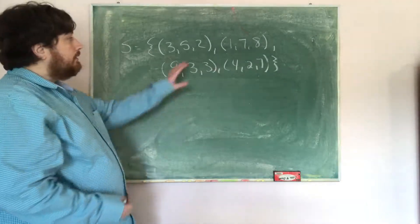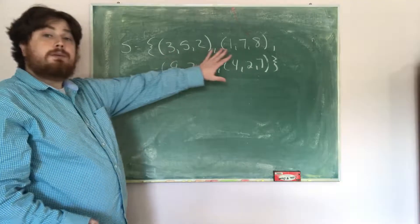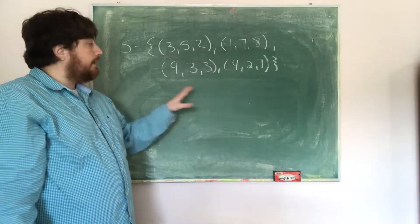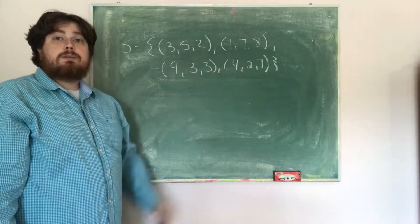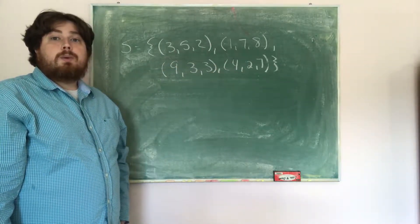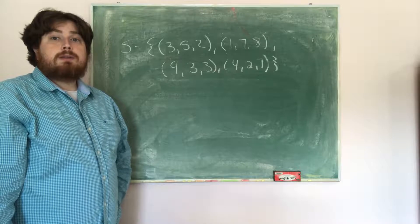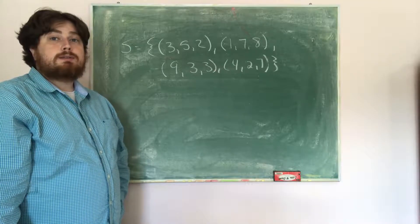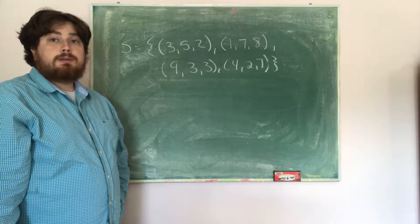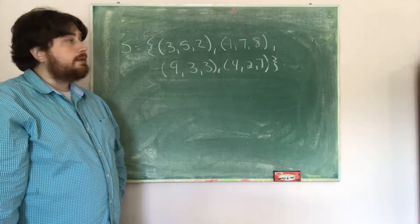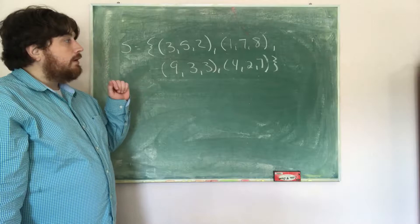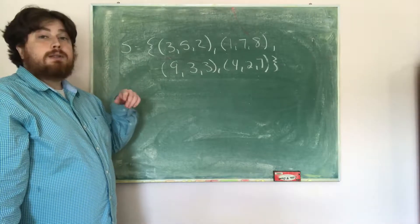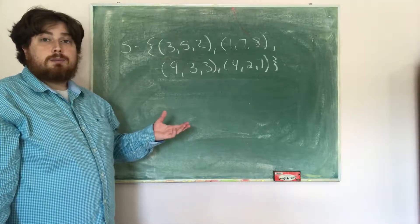As we look at the set of vectors — (3, 5, 2), (1, 7, 8), (9, 3, 3), and (4, 2, 7) — we want to determine if this set of vectors is linearly independent, a spanning set of R cubed, or if it is a basis for R cubed.